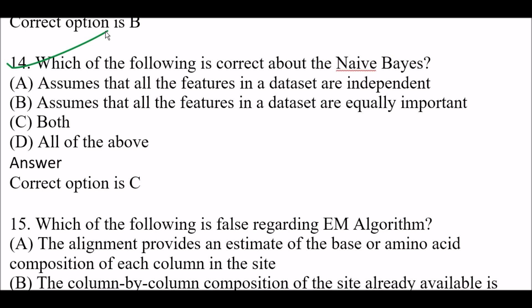Next question: Which of the following is correct about Naive Bayes? Option A: Assumes that all the features in a dataset are independent. Option B: Assumes that all the features in a dataset are equally important.